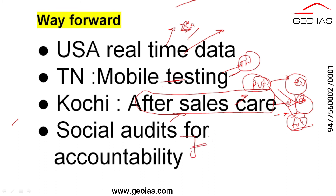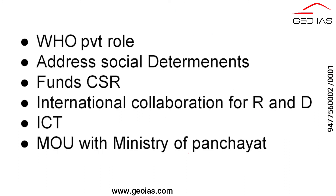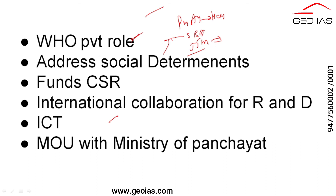We need social audits at local government level. One step in the right direction is that very recently in July 2022, the Ministry of Panchayati Raj and the Ministry of Health and Family Welfare came together for an MOU to conduct awareness and evaluation. Apart from medicine and policy and funds, we need to focus on social determinants also - like using Pradhan Mantri Awas Yojana for better housing, Swachh Bharat Abhiyan for better toilets, and Jal Jeevan Mission for providing safe drinking water.